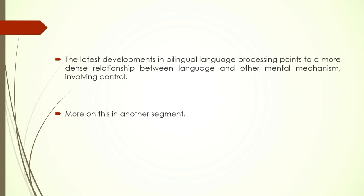The third context is the dense code-switching context, where both languages are equally possible in any given setting with any participant, so it also requires less control demand. These three contexts represent the latest developments in understanding bilingual processing and its relationship to control mechanisms. We will discuss the finer aspects of language control and domain-general executive control in a different module.